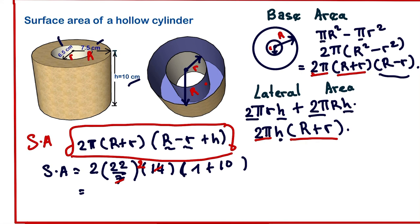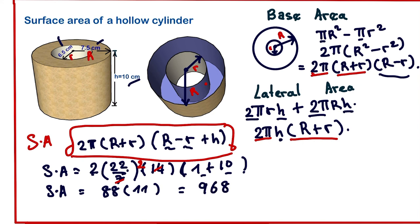Continuing the simplification: 2 × 22 = 44, and 44 × 2 = 88. Inside the bracket we have 1 + 10 = 11. So Surface Area = 88 × 11 = 968 cm². Thanks for watching — please subscribe.